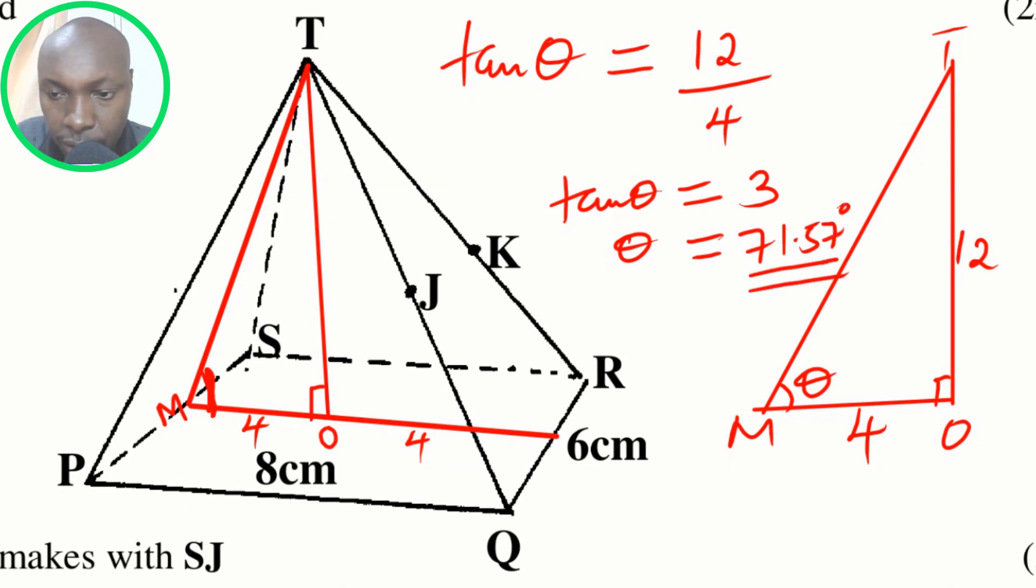71.57 degrees. So that is how we get the angle between those two planes - that is the angle between plane PTS and the base PQRS. Thank you.